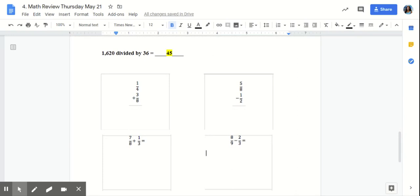Number two, we have 1,620 divided by 36. Remember, when we have division, we can always use repeated subtraction to solve. If you got your work correct, your answer should be 45.